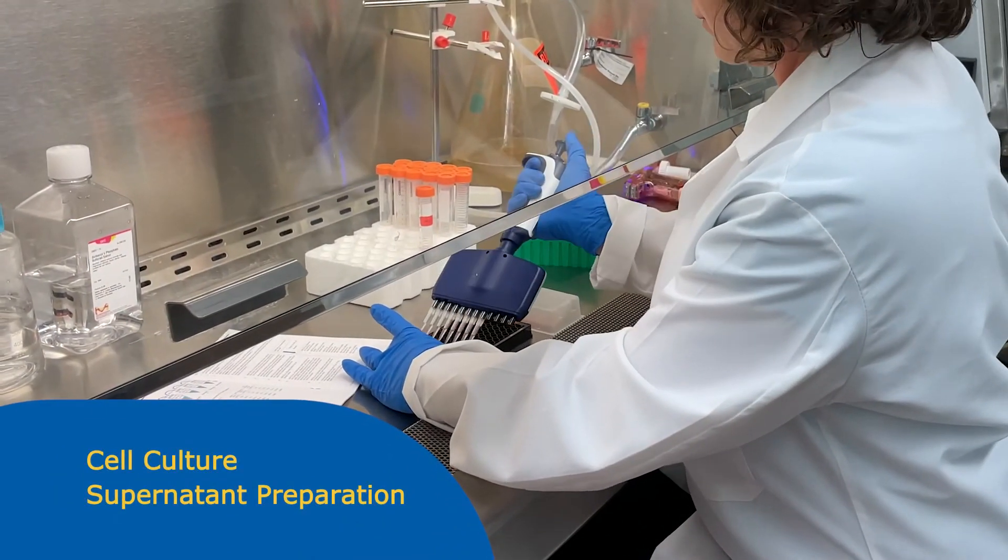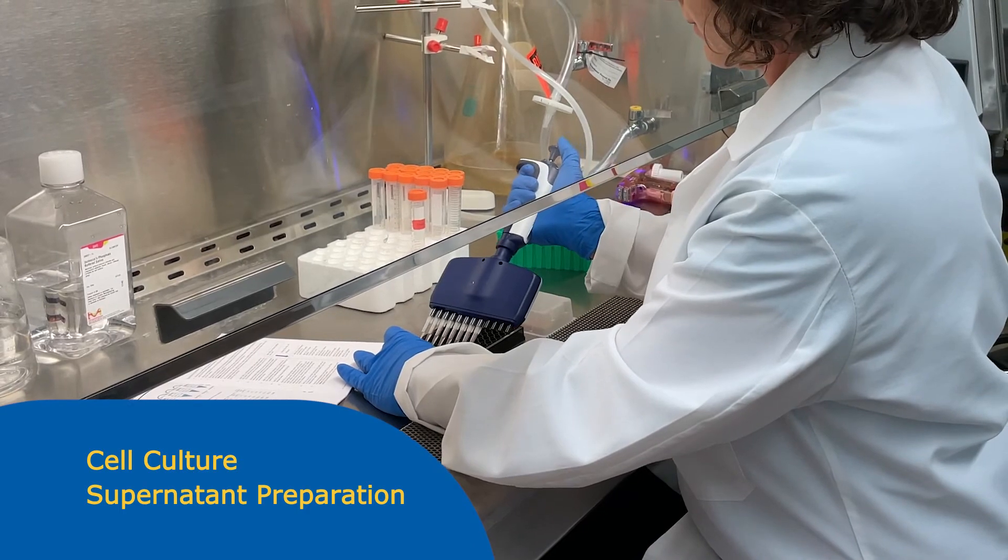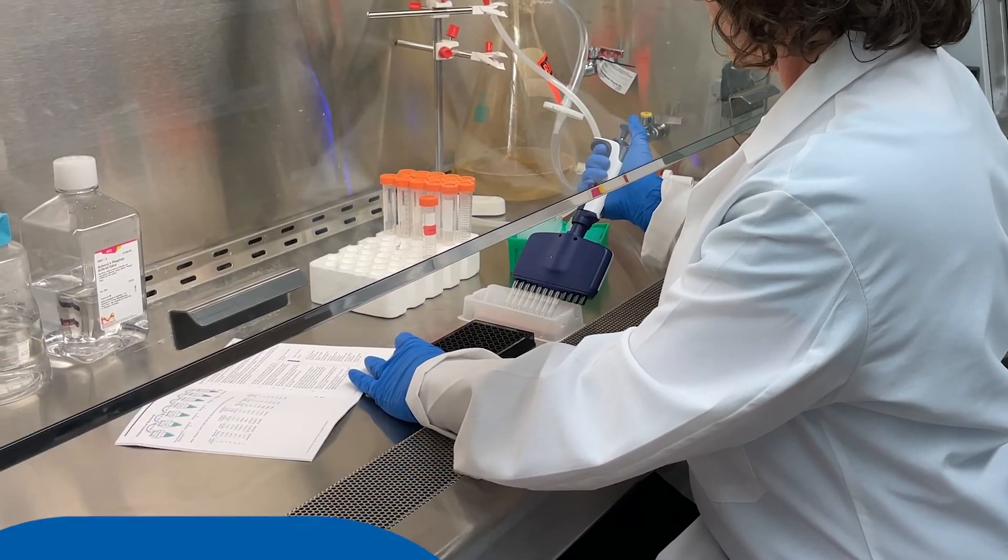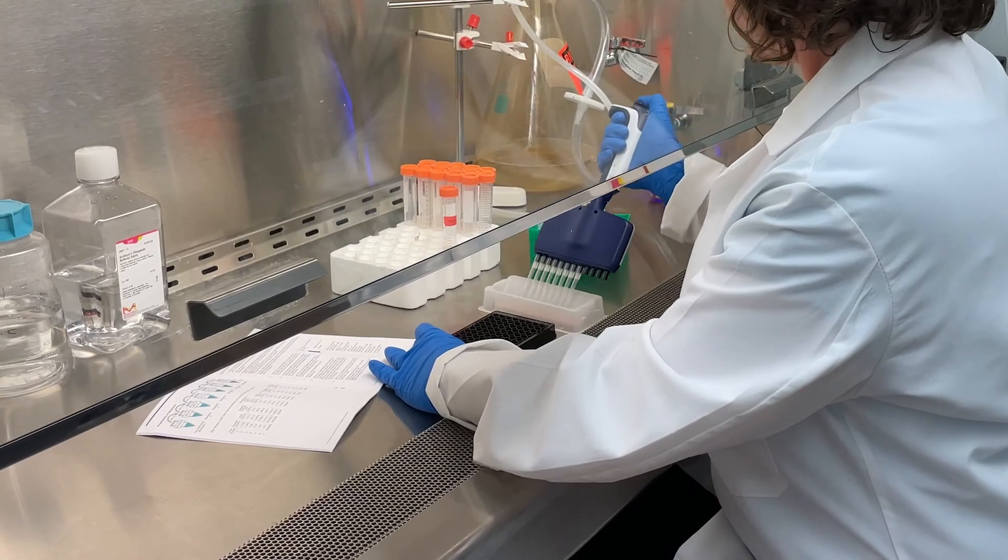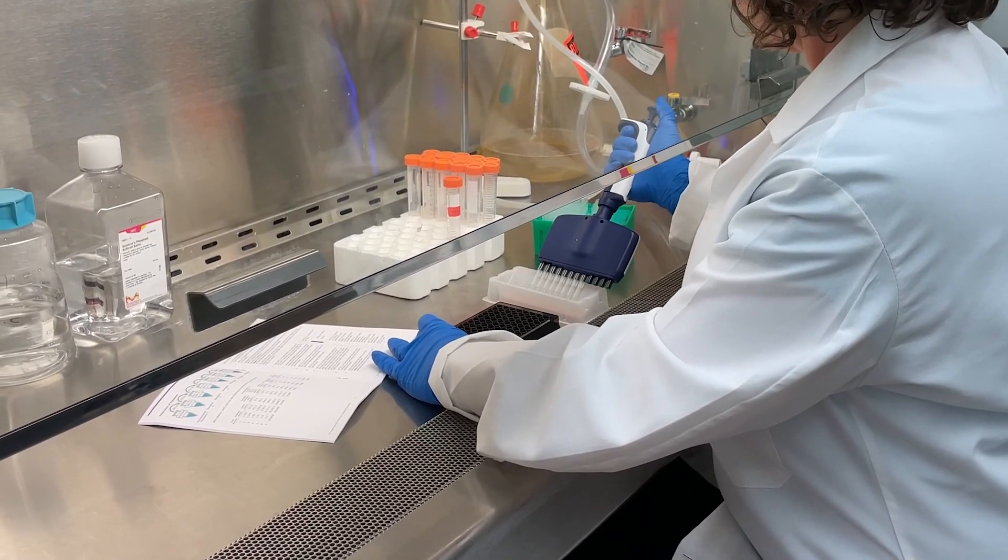Cell culture samples should be centrifuged to remove debris and assayed immediately or stored at minus 20 to minus 80 degrees Celsius until needed. Fresh culture media should be used as the matrix solution in the blank, standard curves, and control wells.